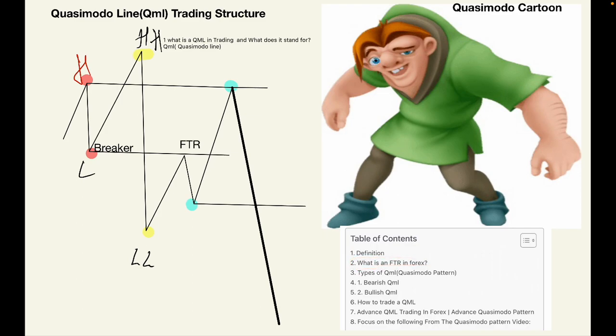And then you're going to have an understanding of the different types of QML, including advanced QML. You can see here it's being indicated at number seven here. So you're going to have the different types of QML, bearish QML and the bullish QML.